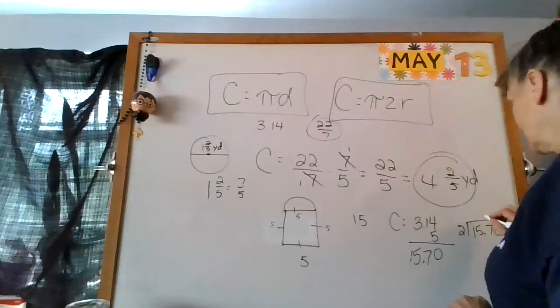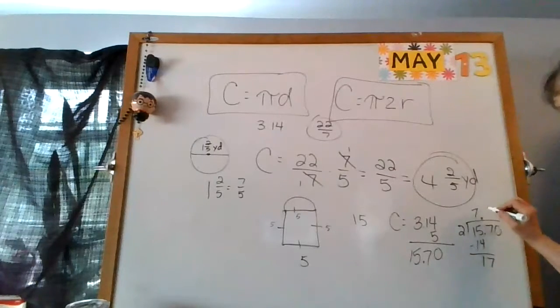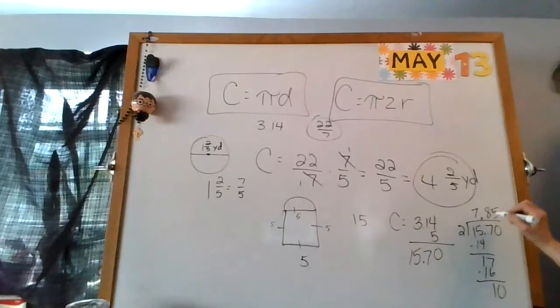2 goes into 15.70. 7 times, bring down my 7, that goes 8 times, bring down my 0, that goes 5 times. So 7.85 yards.